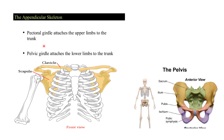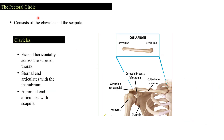Now let's see the girdles. The pectoral girdle attaches the upper limbs to the trunk. It is formed by the clavicle and scapula. The pelvic girdle attaches the lower limbs to the trunk and is formed by the pelvis bone, sacrum, and coccyx. The clavicle, also known as the collar bone, is horizontally placed superior to the thorax. Its sternal (medial) end attaches to the manubrium of the sternum, and its acromial end articulates with the scapula.